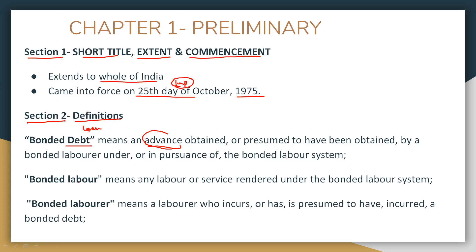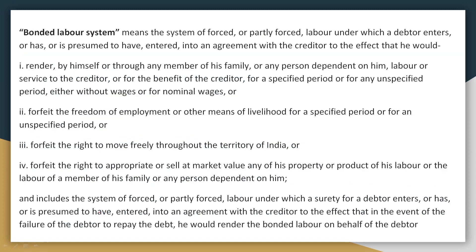The next definition is 'bonded labor.' This refers to the service rendered by a laborer under the bonded labor system — the job being done in exchange for the loan from a moneylender. The person performing this service is called a 'bonded laborer.' So bonded labor refers to the service itself, while the bonded laborer is the person performing it.